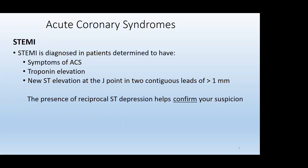The STEMI — the ST segment elevated myocardial infarction — is diagnosed by the emergency department when a patient has symptoms of ACS, a noted troponin elevation, and the hallmark of new ST segment elevation at the J-point in two contiguous leads greater than one millimeter. That's the baseline for our regional criteria for heart alerts. The presence of reciprocal ST segment depression should help confirm your suspicion of a true STEMI. Just because you don't see ST segment depression doesn't mean it's not a STEMI, but when you do see it, it helps confirm that.